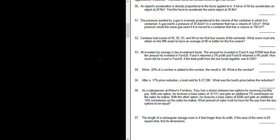Let's work out problem number 52. Candice had scores of 95, 82, 93, and 84 on her first four exams of the semester. What score must she obtain on the fifth exam to have an average of 90 or better for the five exams?